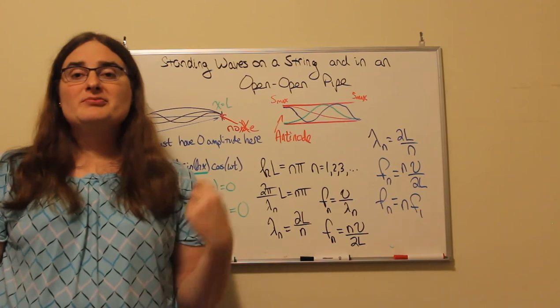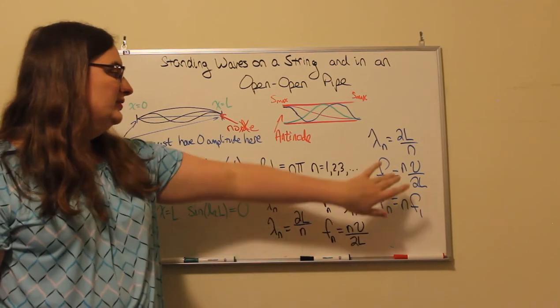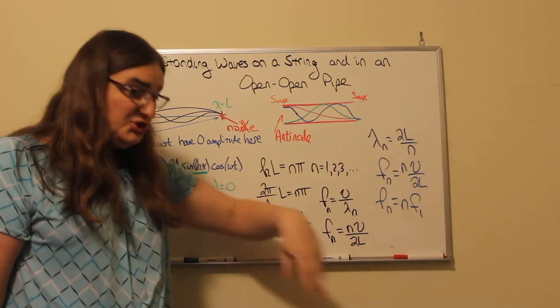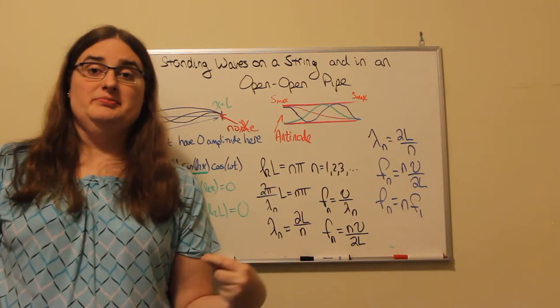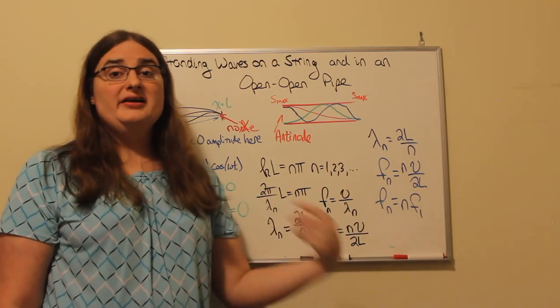If n equals one, in music we call that a fundamental, or the first harmonic of a system. And all of those values of n are referred to as harmonic numbers.